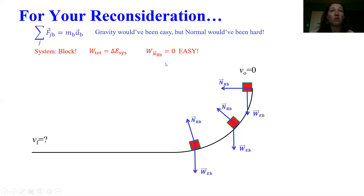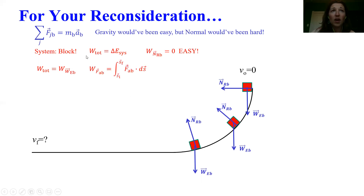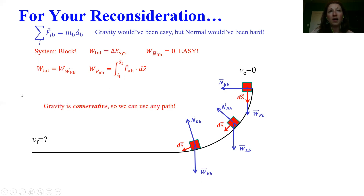The work done by the normal force is actually zero for the same reason it was zero in the last example. Even though the normal force is changing direction, it's always perpendicular to the displacement vector, so it's always going to be zero. The work done on this block is only going to be due to the weight force. Using the definition of work, I need to know where the displacement vector is pointing at all times — you might think that's hard because it's changing direction. But because gravity is a conservative force, we don't have to pick the actual path the object took — we can pick any path as long as it starts and ends at the same two points.